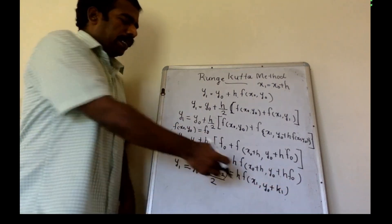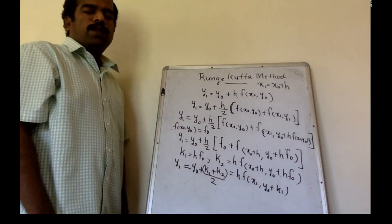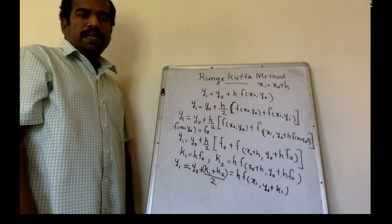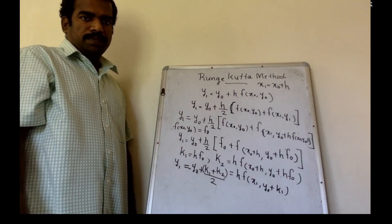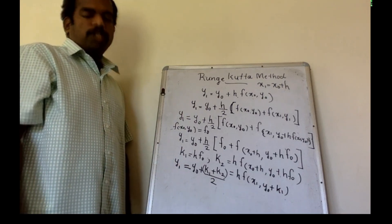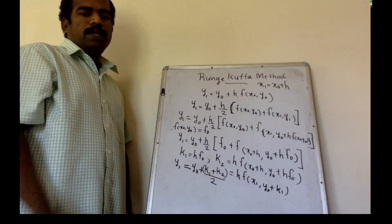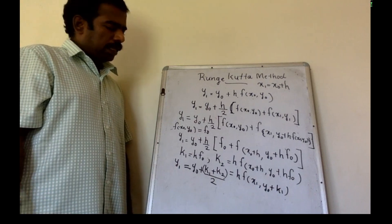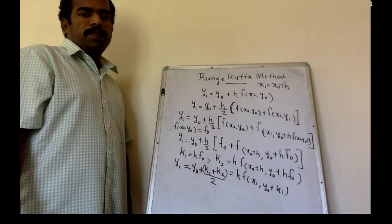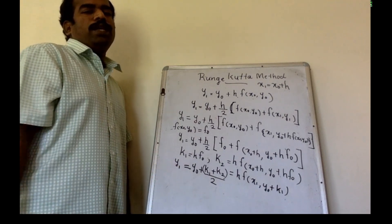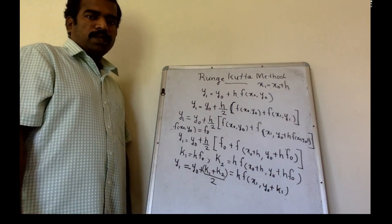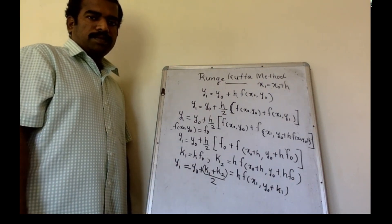So, in the second order, you can get the error of the order of h-cube. This is the error of the order of h-cube. h-cube is the error of the order, and this should be very small. Okay? That's right.